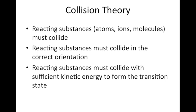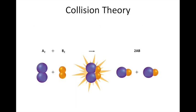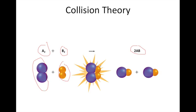Here we can see two molecules, A2 and B2. In order for A2 and B2 to react to form two moles of AB, these two molecules must collide with sufficient energy and in the correct orientation. With a correct orientation and sufficient energy, the bonds between A2 would be broken, the bonds between B2 would be broken, and we would form new chemical bonds between one atom of A and one atom of B. So we have to break our reactant bonds and form our new product bonds.